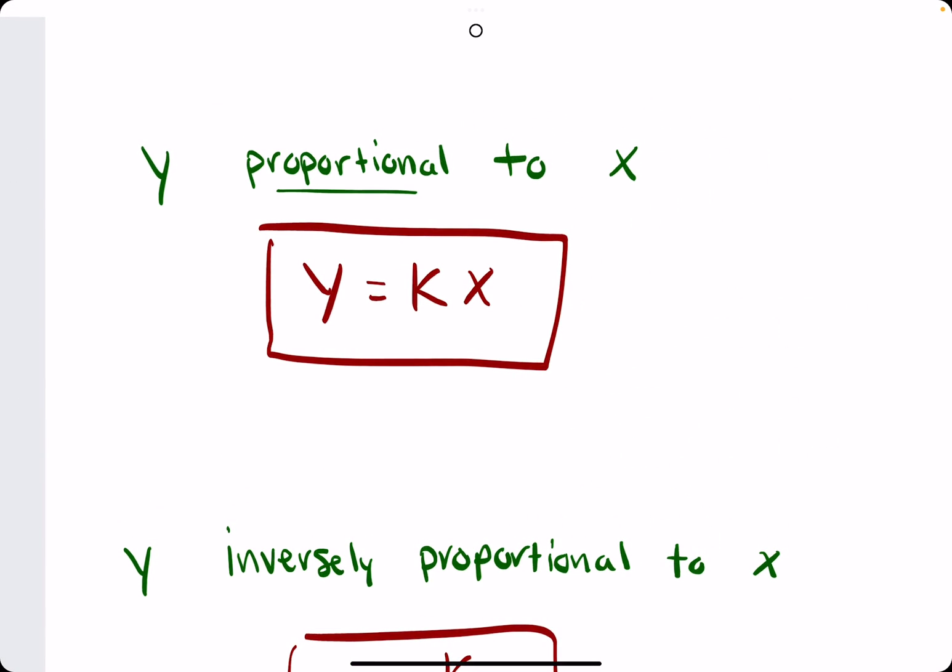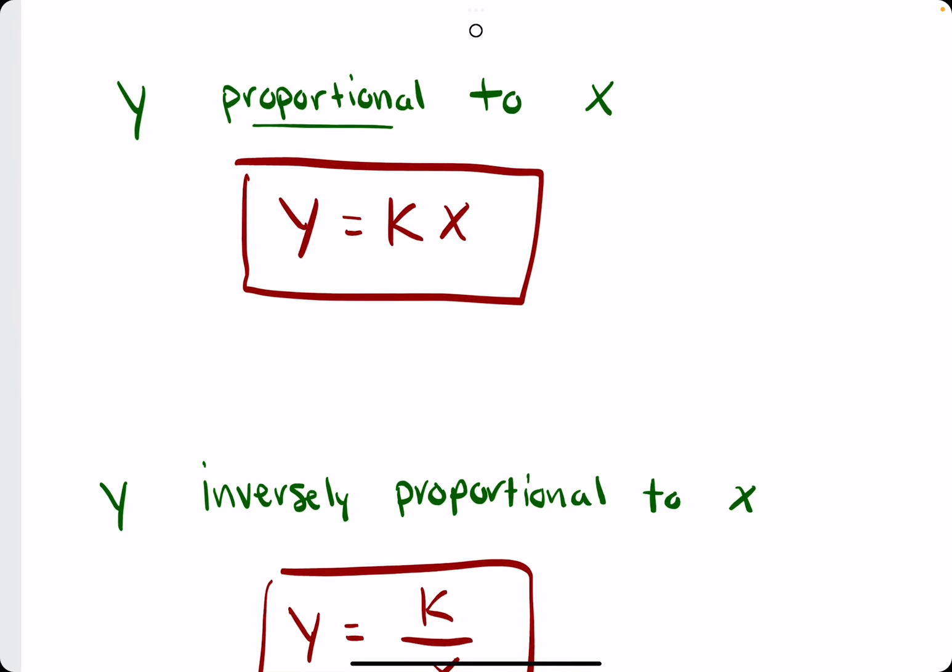Whenever you see the word proportional, say for example, if y is proportional to x, that means we can represent y as the product of some constant k and x. So y is equal to k times x if y is proportional to x.